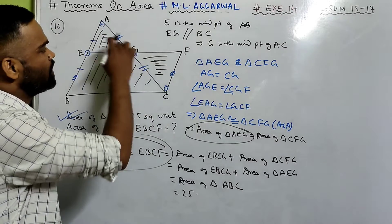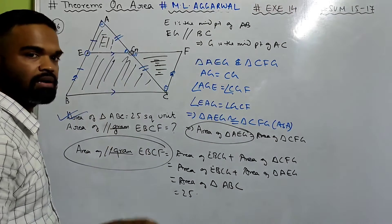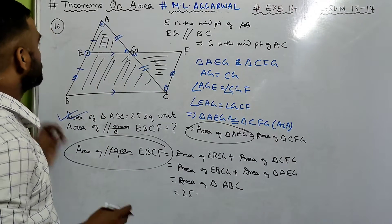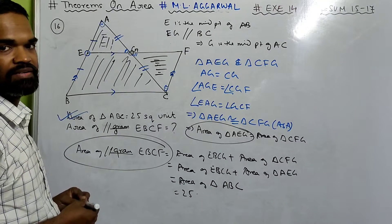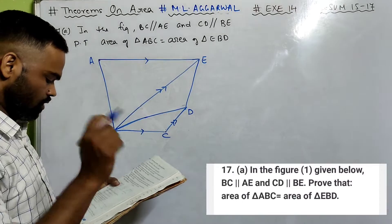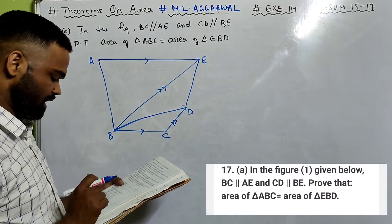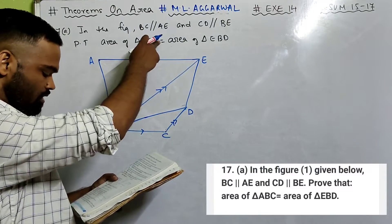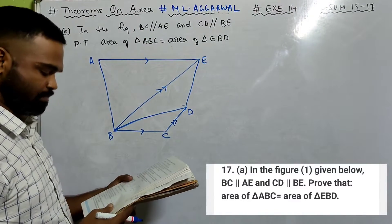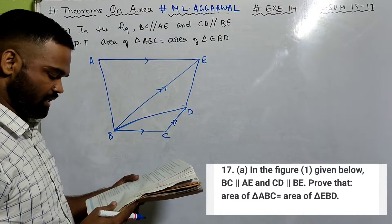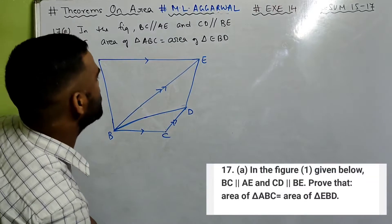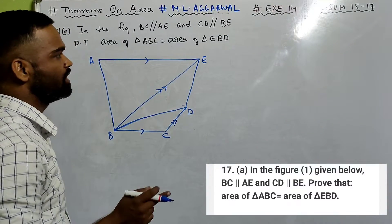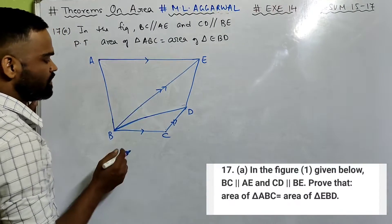Done — pretty simple. Just prove that the two triangles are congruent and your work is done. Now let us look at number 17. In the figure, BC is parallel to AE and CD is parallel to BE. Prove that area of triangle ABC equals area of triangle EBD.